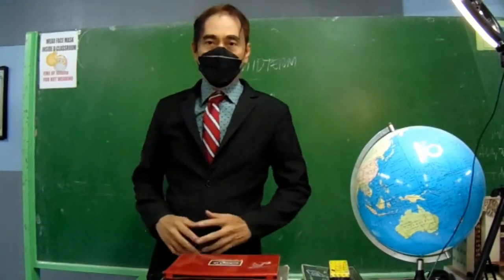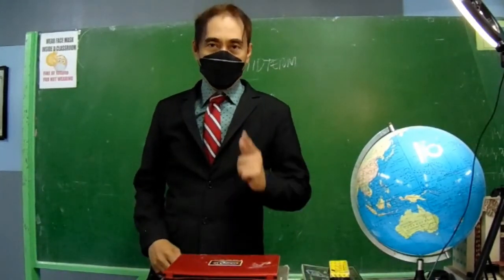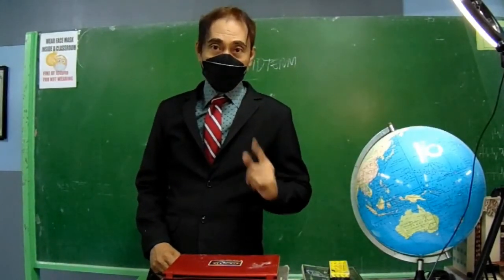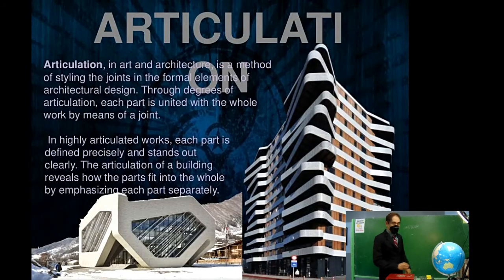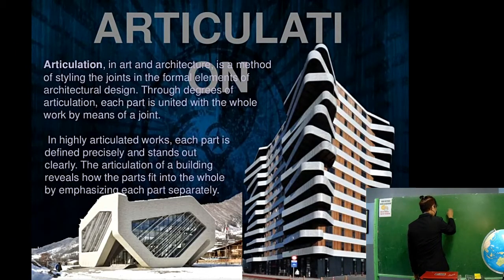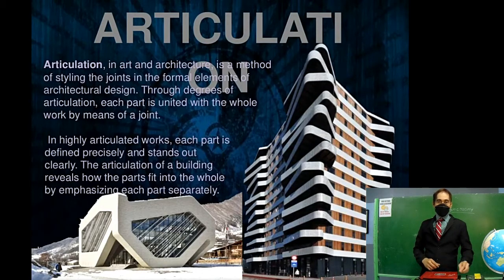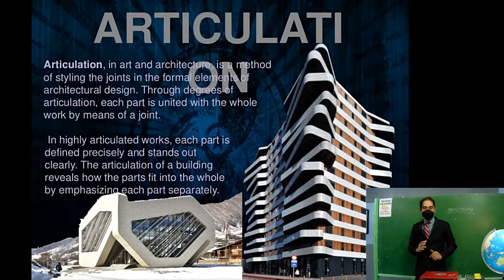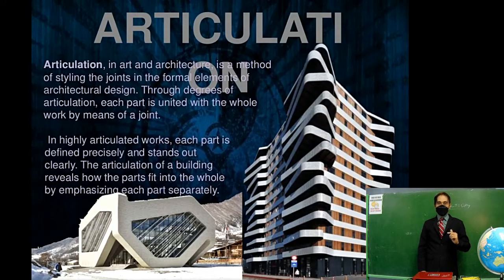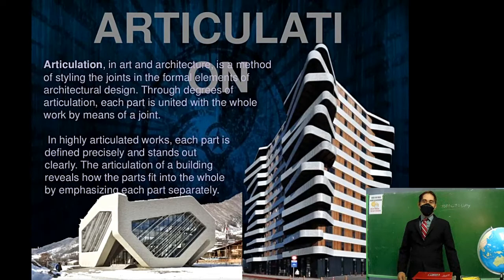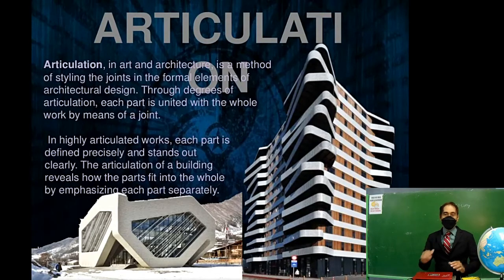Welcome back to our channel. Today's topic is all about the articulation of form — a theory of design in architecture. What is articulation of form? In art and architecture, it is a method of styling the joints in the formal elements of architectural design. Through degrees of articulation, each part is united with the whole work by means of a joint. In highly articulated works, each part is defined precisely and stands out clearly. The articulation of a building reveals how the parts fit into the whole.